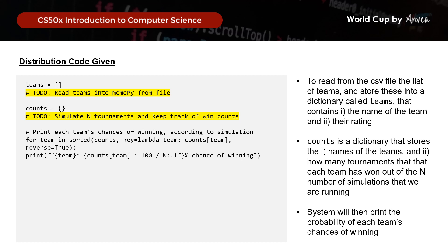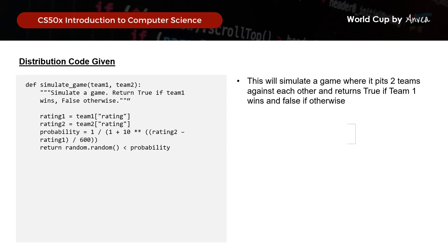Let's look at the simulate_game function. This will pit two teams against each other and return true if team 1 wins and false otherwise, based on a probability formula that takes into account each of their ratings. So this function focuses on the winner of a particular game.